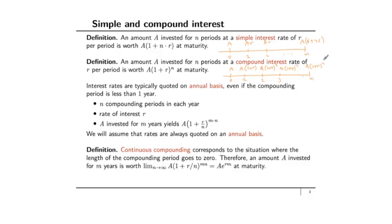We'll talk about different rates at which compounding occurs. In this course, all interest rates are stated on an annual basis. If there are n compounding periods per year, the interest rate per period is the annual rate divided by n. If you are compounding over m years with n periods per year, the number of compounding periods is m·n, and the total compound amount is A times (1 + r/n)^(m·n).